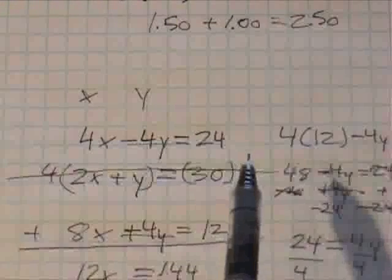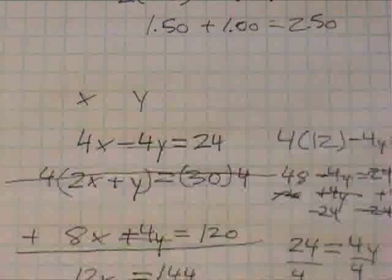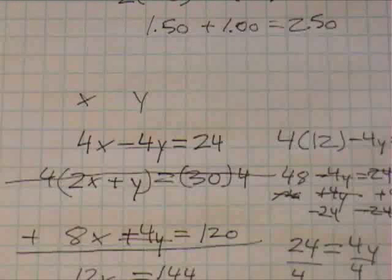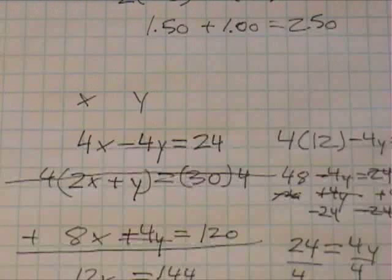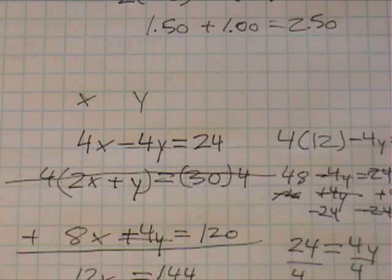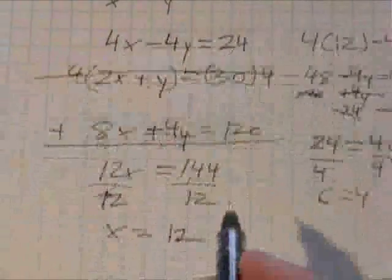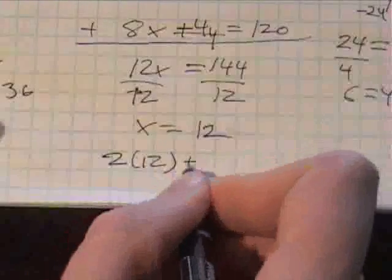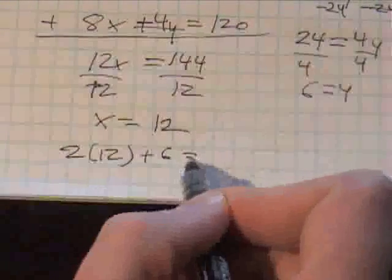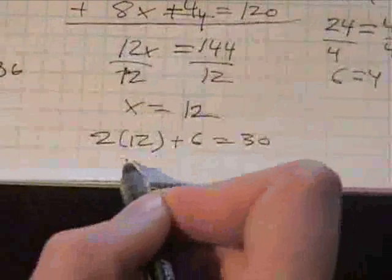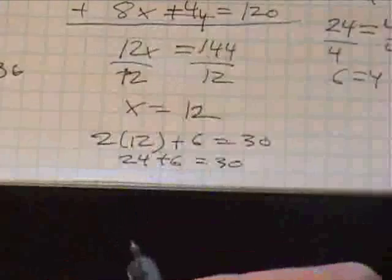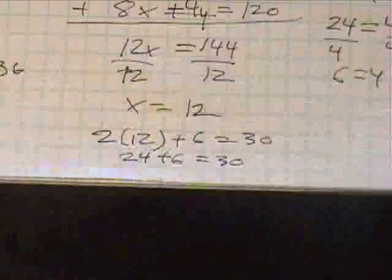So let's see here, the bottom equation was twice the first number plus the second number equals 30. Okay, that seems easy enough. So 2 times 12, which is the first number, plus 6 should equal 30. This comes out to 24 plus 6 equals 30, and that is correct. So you've solved it, you've got it right. Good job.